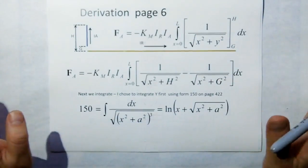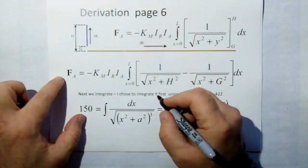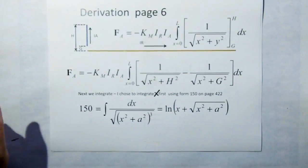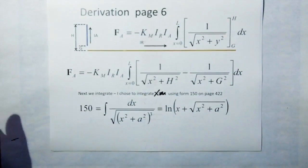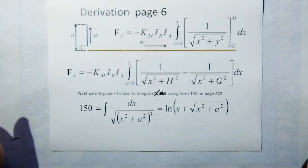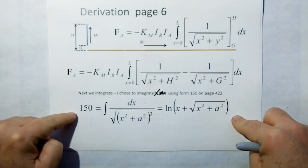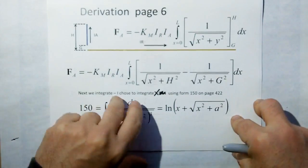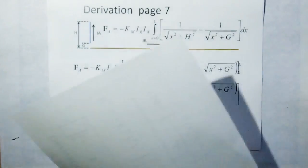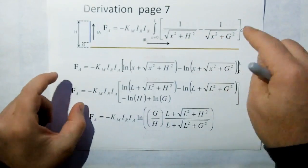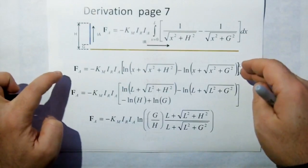Now we have to integrate with X and we're using form 150 on page 422. This is form 150 on page 422.